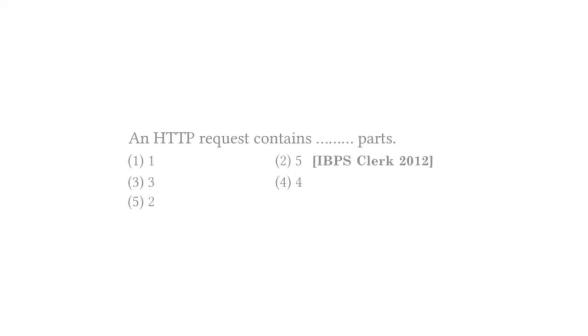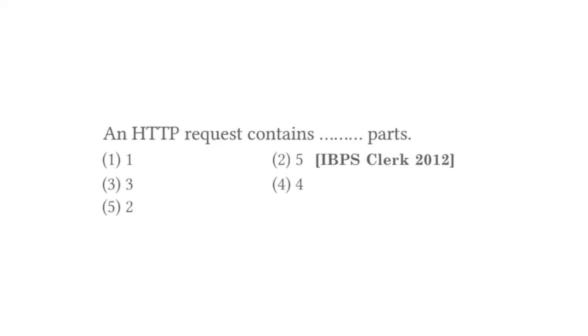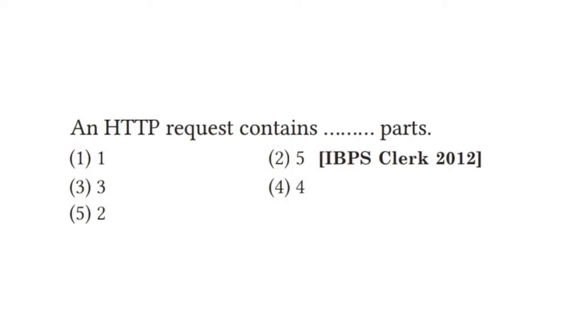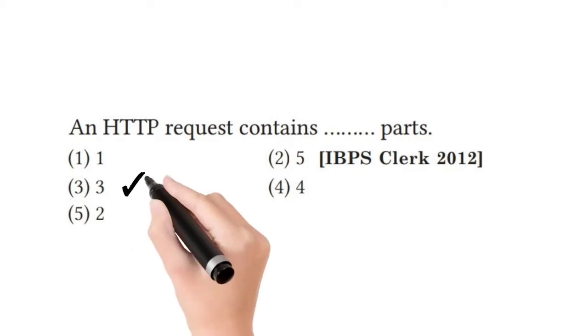How many parts does a URL have — 1, 5, 3, or 2? The correct answer is 3.